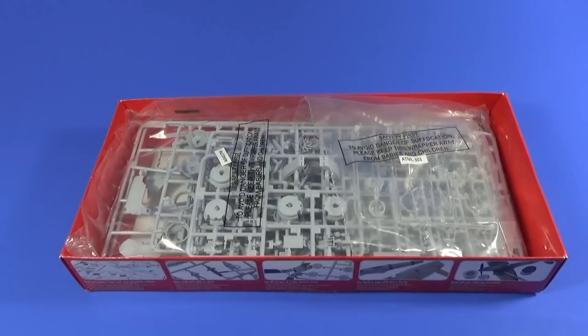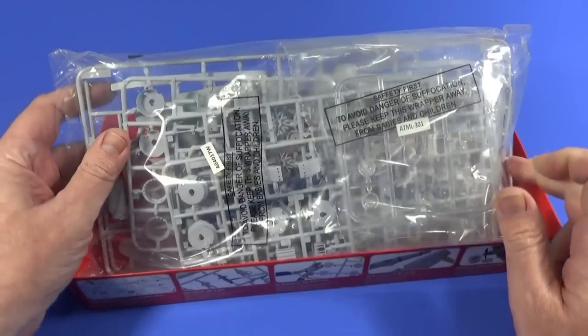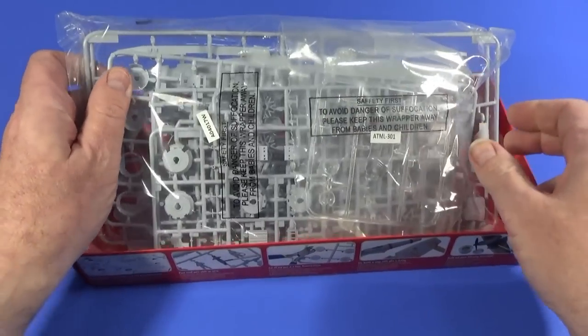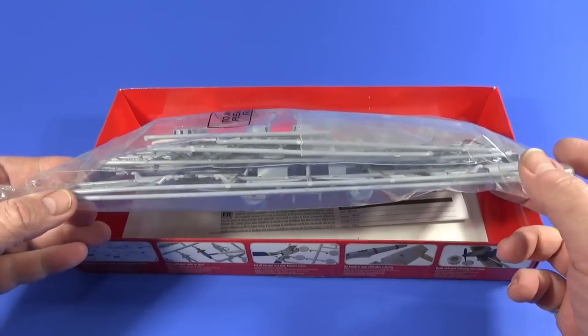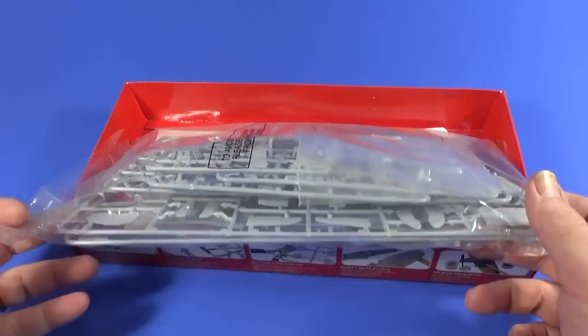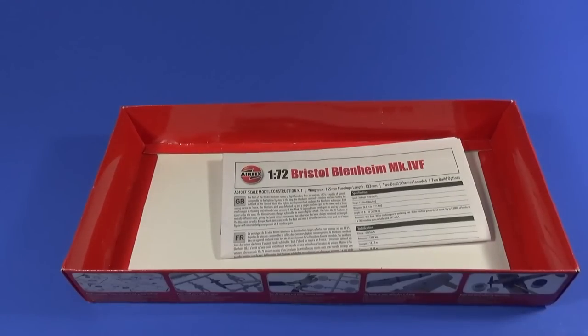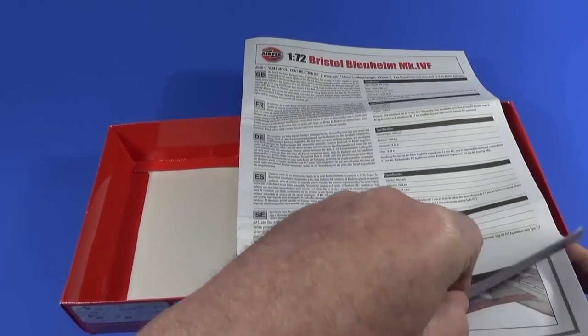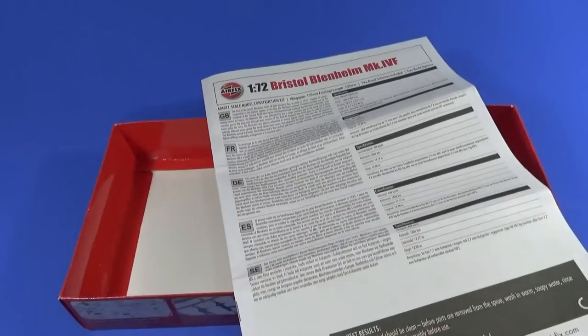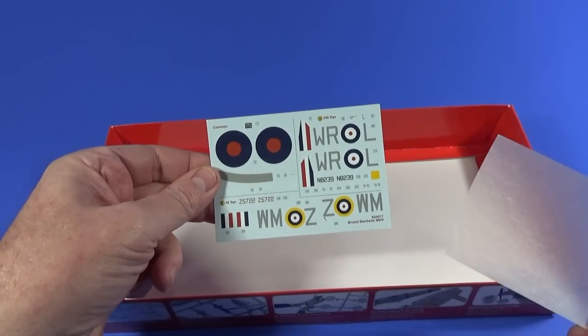As usual with every Airfix kit you've seen me do so far, there's a big bag full of frames. Almost said sprues, they're frames. There's one, two, four, five, six frames in here that I can see, plus a transparent frame. We'll have a look at that in more detail in a minute. There is this instruction sheet, it's an instruction booklet really. It goes on for quite a few pages. And of course, the decal sheet.